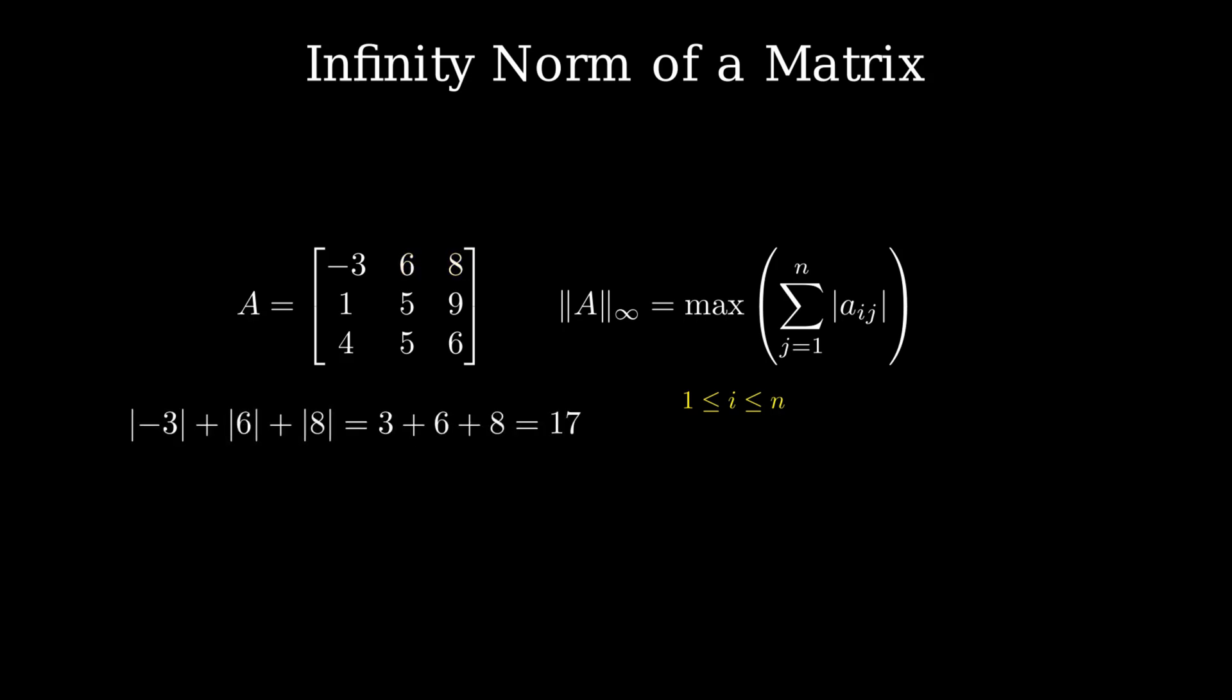To compute the infinity norm of a matrix, calculate the sum of the absolute values of the elements in each row. The infinity norm is the largest of these row sums.